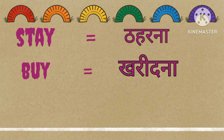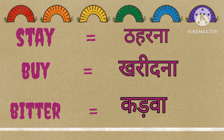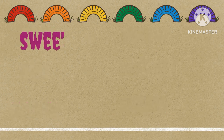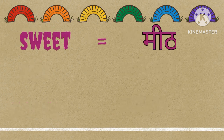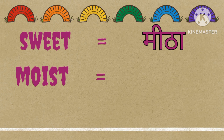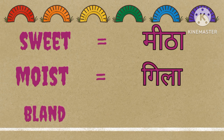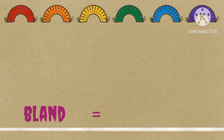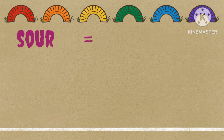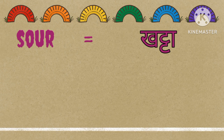Bitter: Kalwa. Sweet: Meeta. Moist: Geela. Blend: Naram. Sour: Khatta. Root: Chhat.